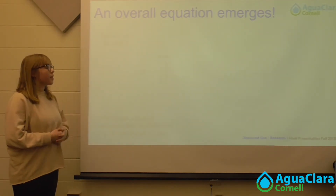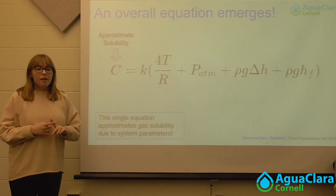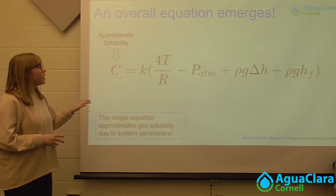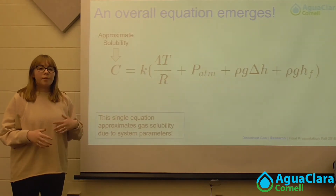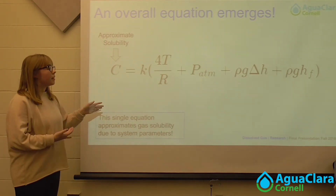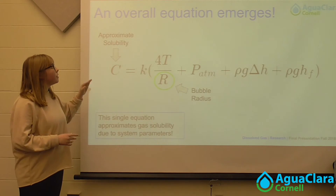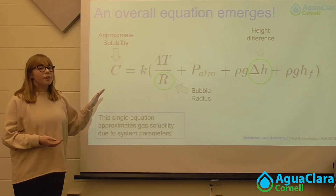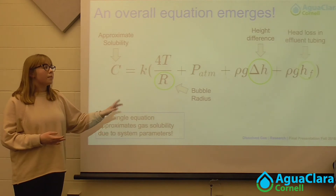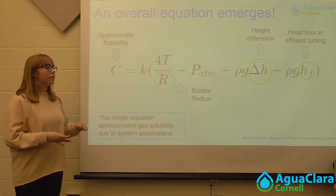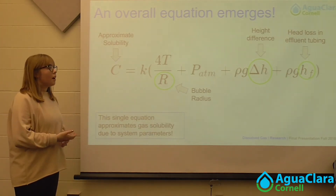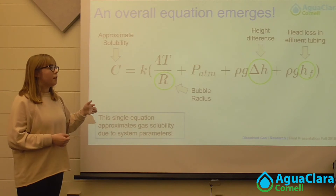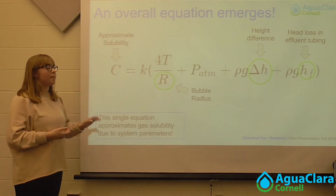This equation is something we put together based on Pascal's Law, Henry's Law, and an equation that relates the pressure in a bubble to its radius. For a more detailed justification for this equation, you can check out our GitHub page. Basically, this relationship relates the solubility to the bubble radius, the pressure inside the bubble, and the height difference between the reactor and the open-faced vent. The last term is known as the headloss term, and this is something we kept in mind when designing our reactor in general.